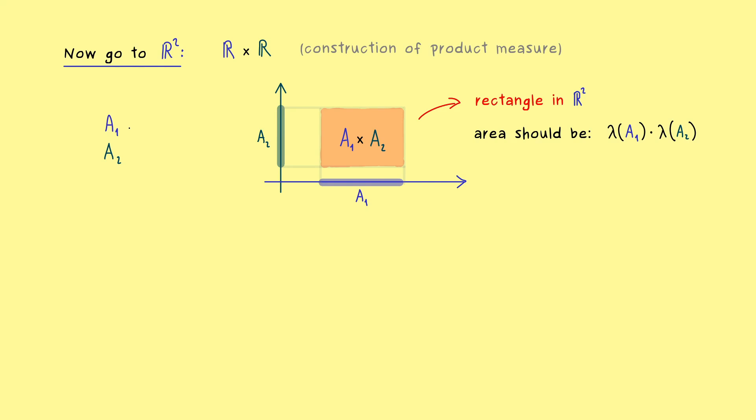So we take all these generalized rectangles and we want to define a measure on R2. And then the whole procedure works exactly like in part one. We already have a formula and then we extend it to a maximal sigma algebra.